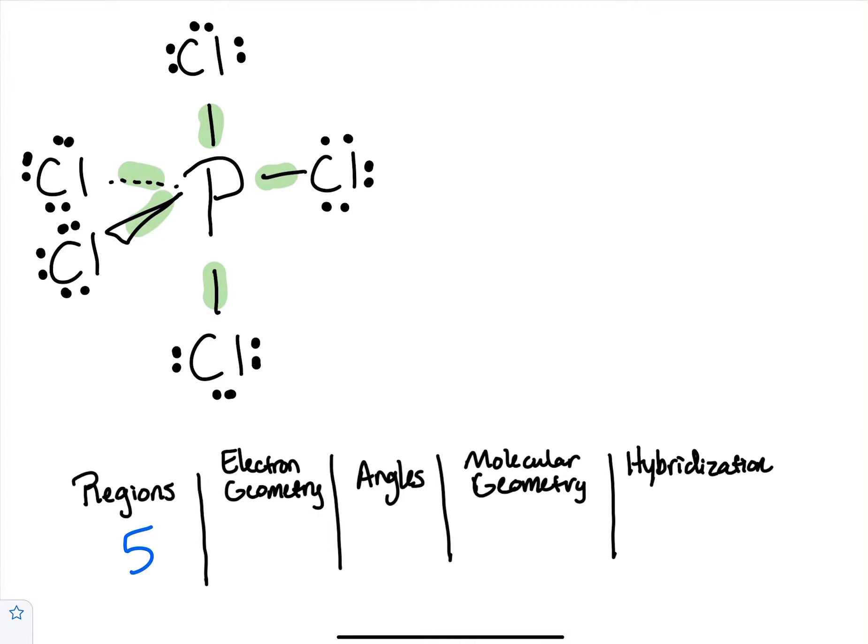Let's look at the electron geometry for this one. We have a total of five bonding regions. Here's our triangle right here and then we have the up and the down, and this triangle is going to make a pyramid up and a pyramid down.